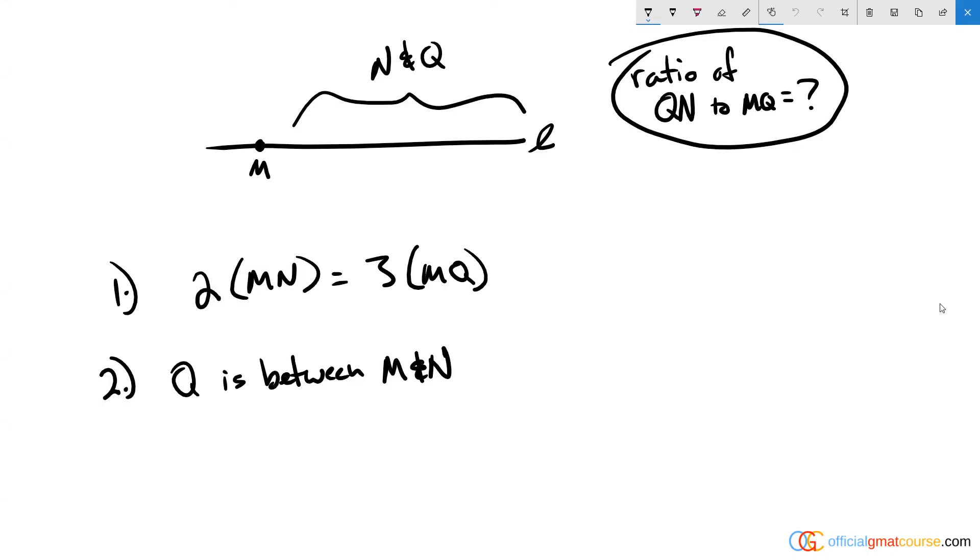This is a number line question. We know that n and q are to the right of m, and this is important information for later on. We're looking for the ratio of qn to mq, which is the distance from q to n and from m to q. Now if we look at the second statement...